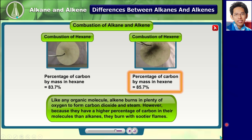Like any organic molecule, alkenes burn in plenty of oxygen to form carbon dioxide and steam. However, because they have a higher percentage of carbon in their molecules than alkanes, they burn with sootier flames.